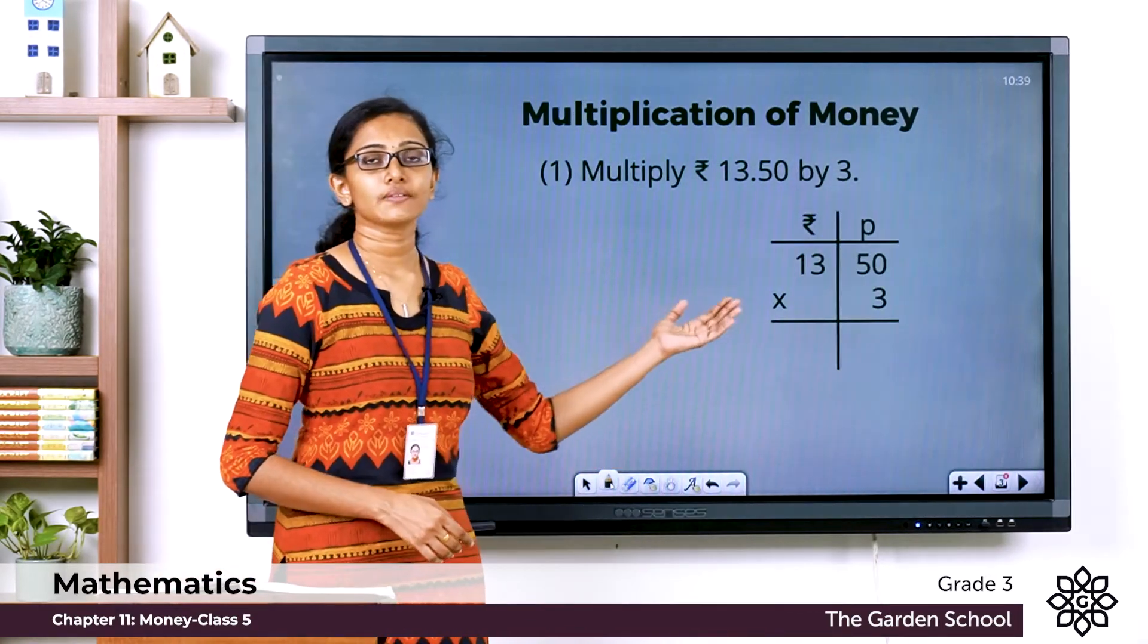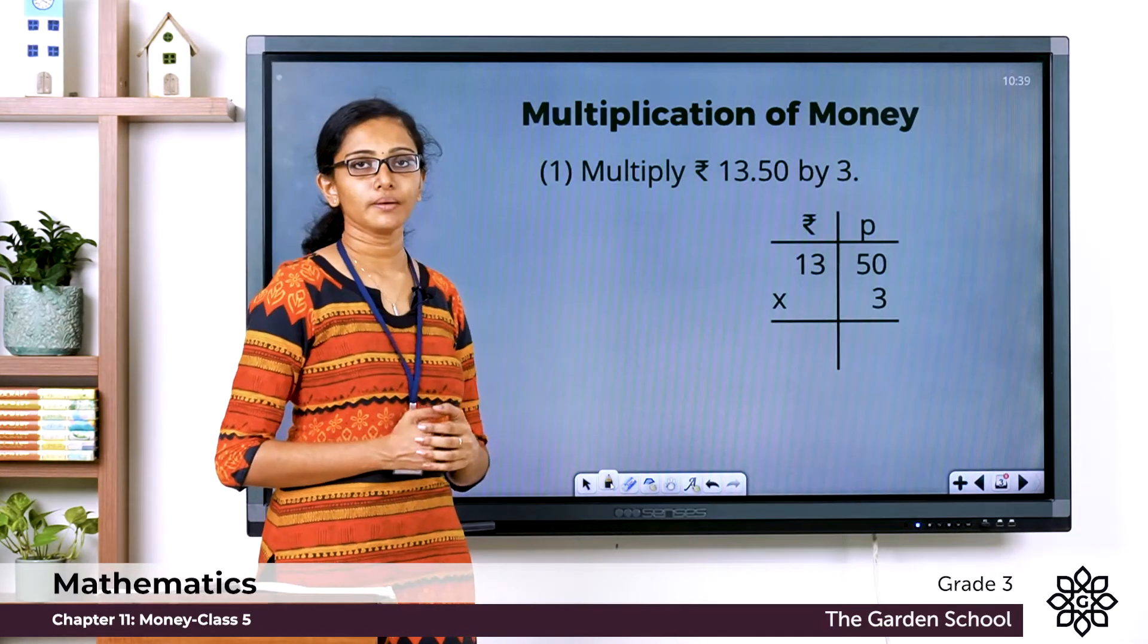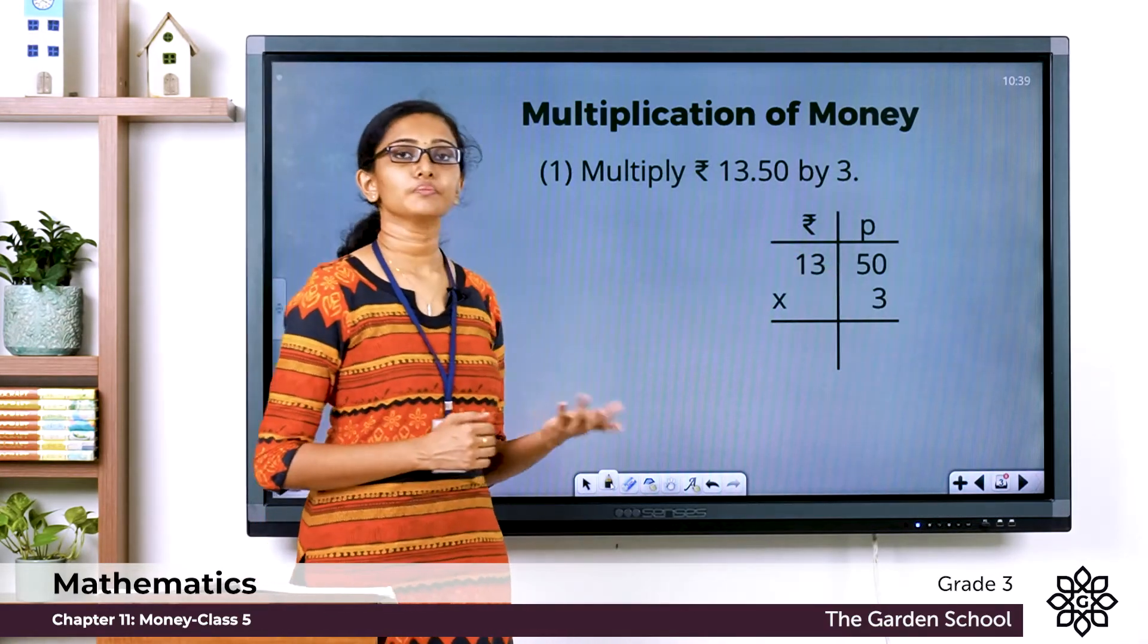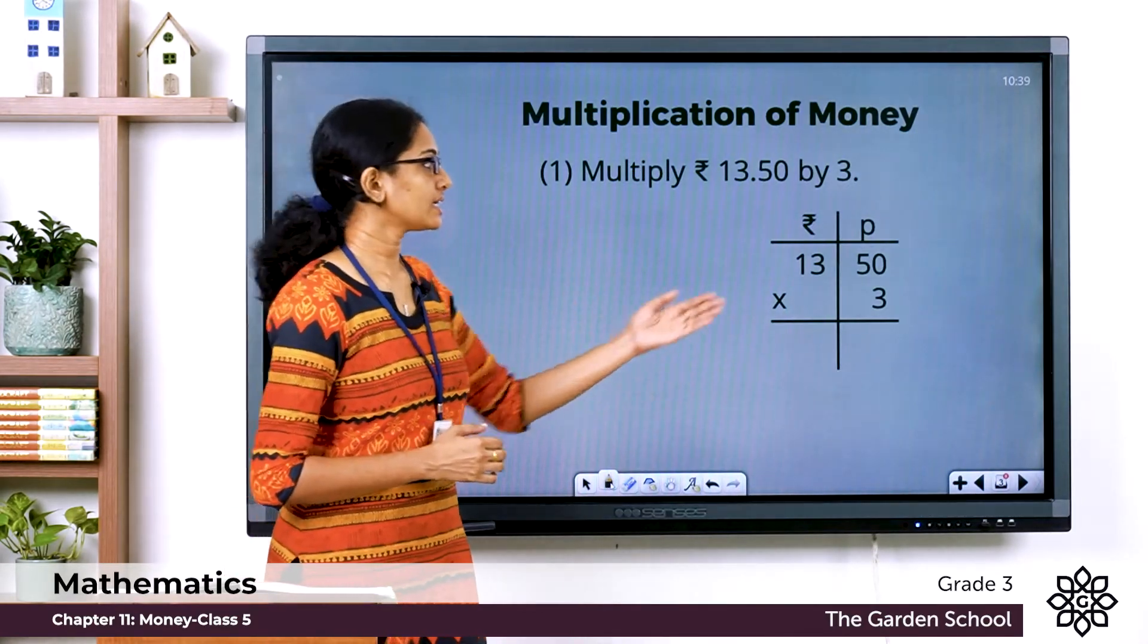First we have written the given amount in proper columns. So you have 13 in the rupee column and 50 in the paisae column. That is 13 rupee 50 paisae multiplied by 3.